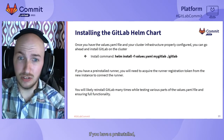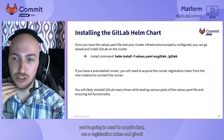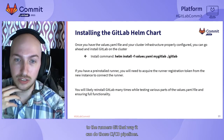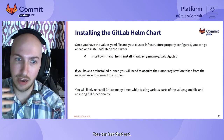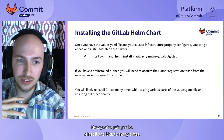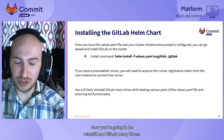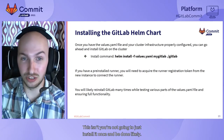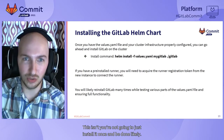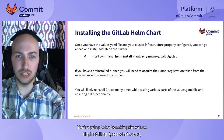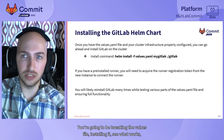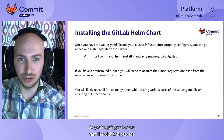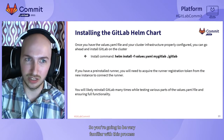If you have a reinstalled runner, you'll need to acquire that runner registration token and give it to the runner so it can do CI/CD pipelines. Now, you're going to be reinstalling GitLab many times — you're not going to just install it once and be done. You'll be tweaking the values file, installing it, seeing what works, taking it down, changing a few things, and reinstalling. So you're going to be very familiar with this process.